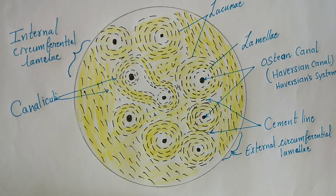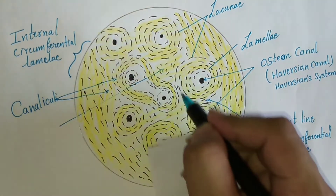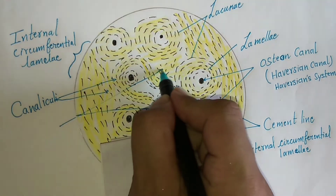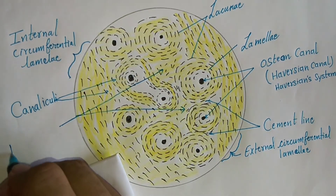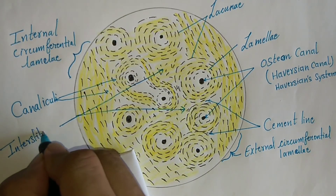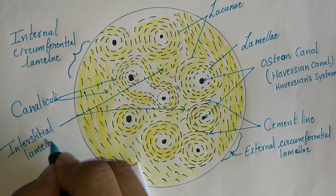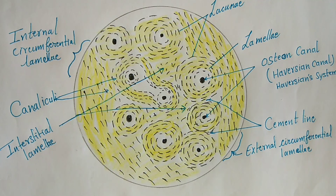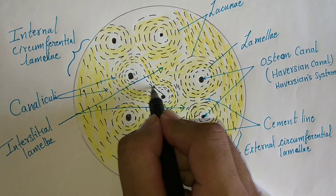The canaliculi penetrate the lamellae, anastomose with other canaliculi, and open directly into the Haversian canal. The small irregular areas of bone between the osteons are called interstitial lamellae, which represent remnants of remodeled osteons. The spaces between two osteones are called interstitial lamellae and also represent remnants of remodeled osteones.